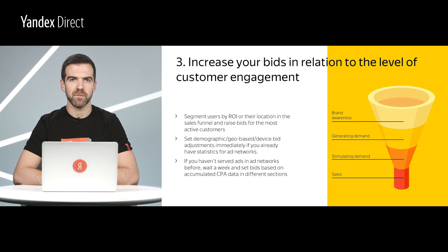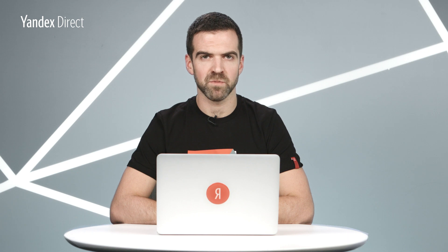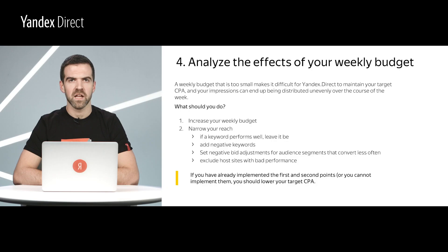Set bid adjustments based on demographic, geo, or device type immediately if you already have statistics for ad networks. If you haven't served ads in ad networks before, wait a week and set bids based on accumulated CPA data in different sections.